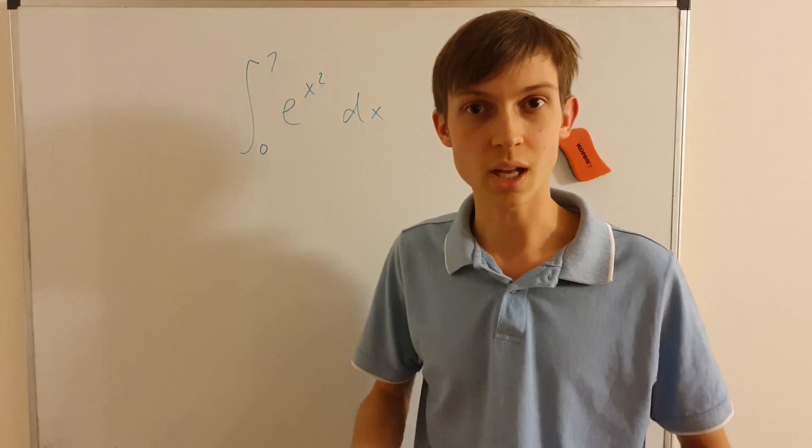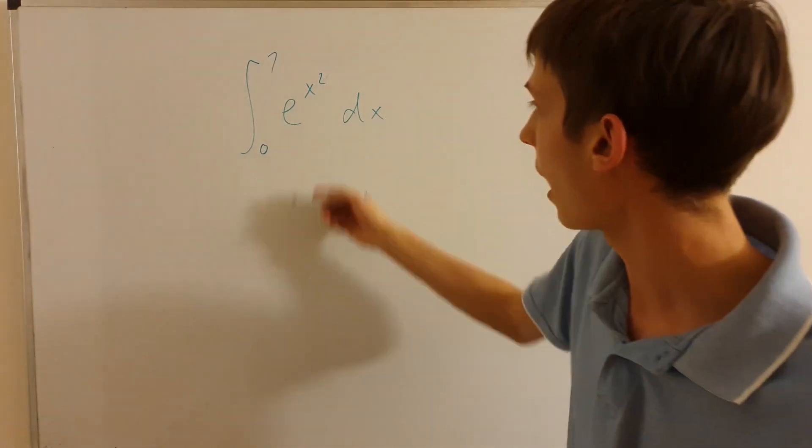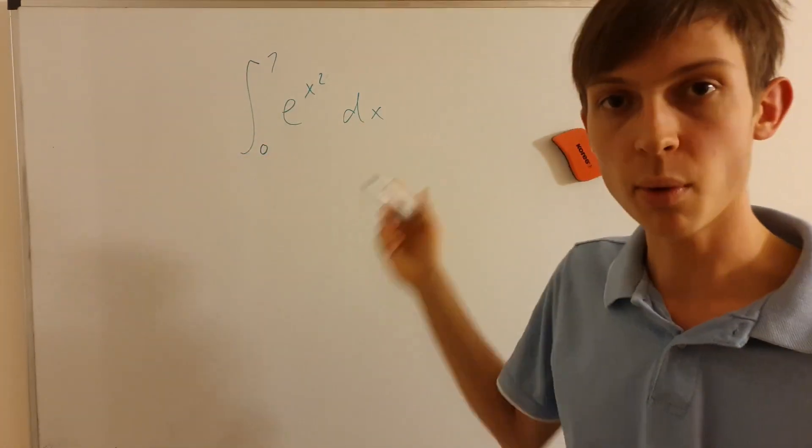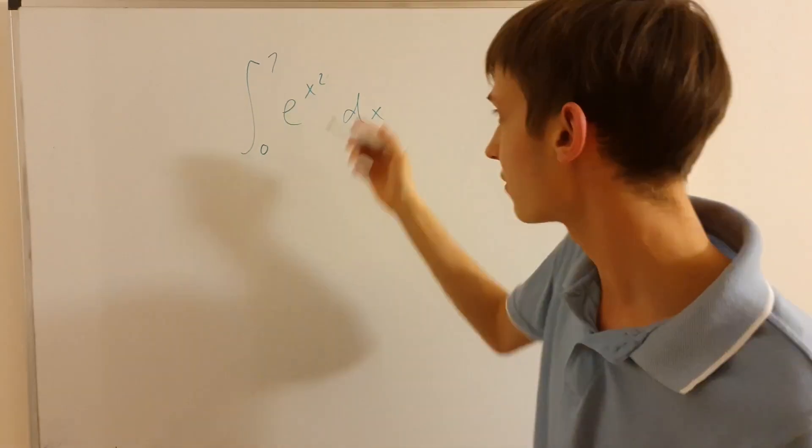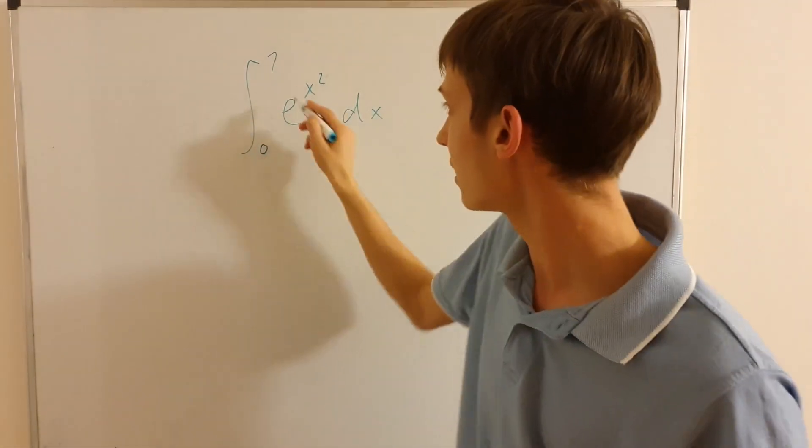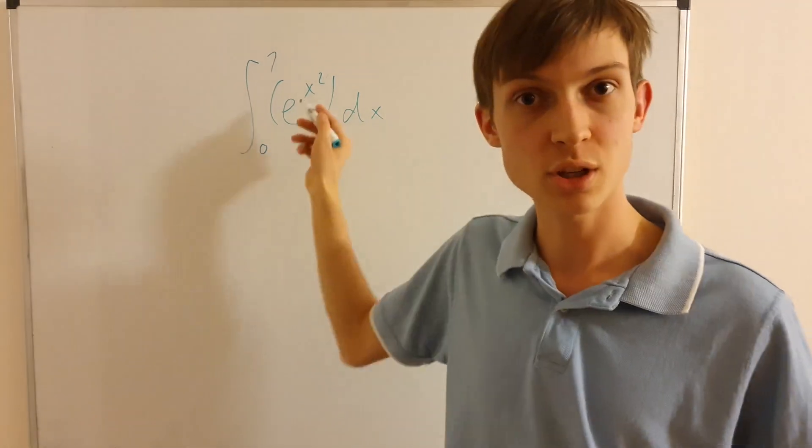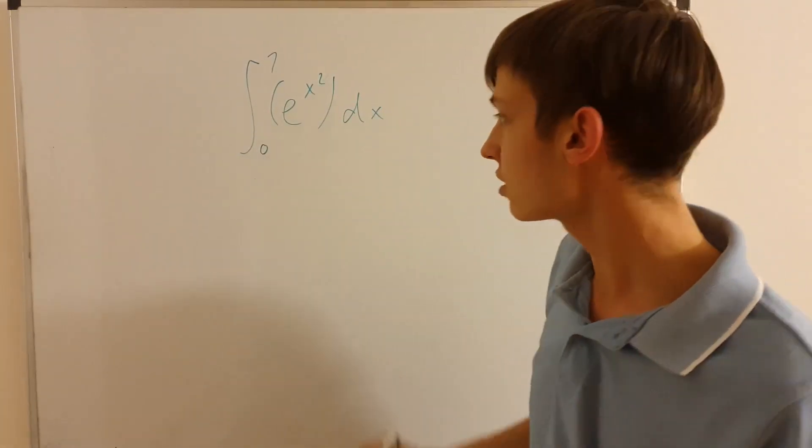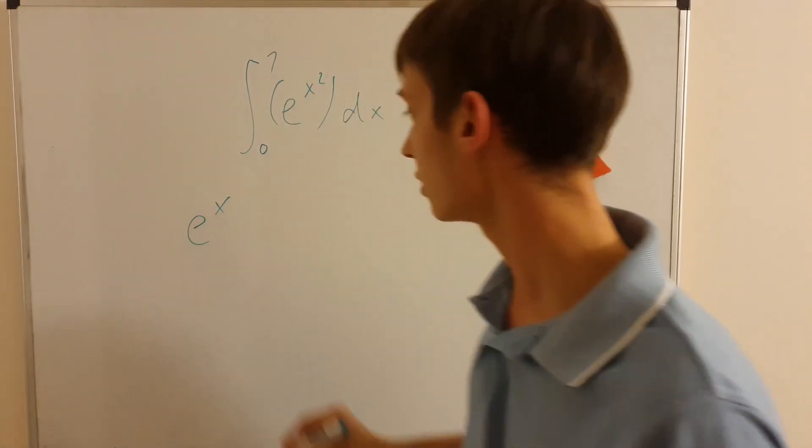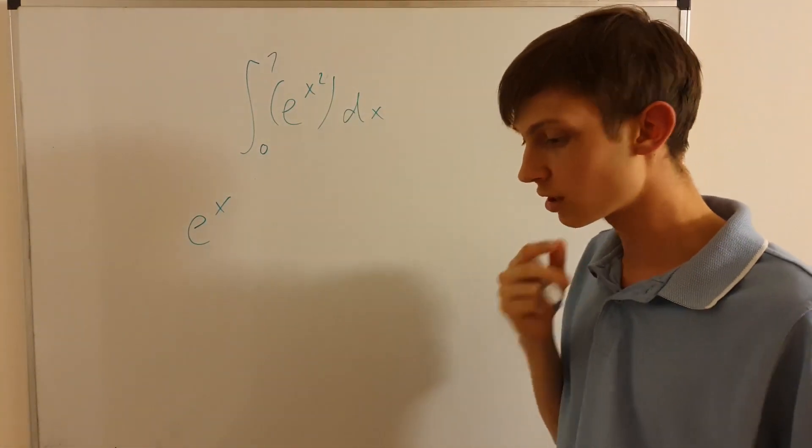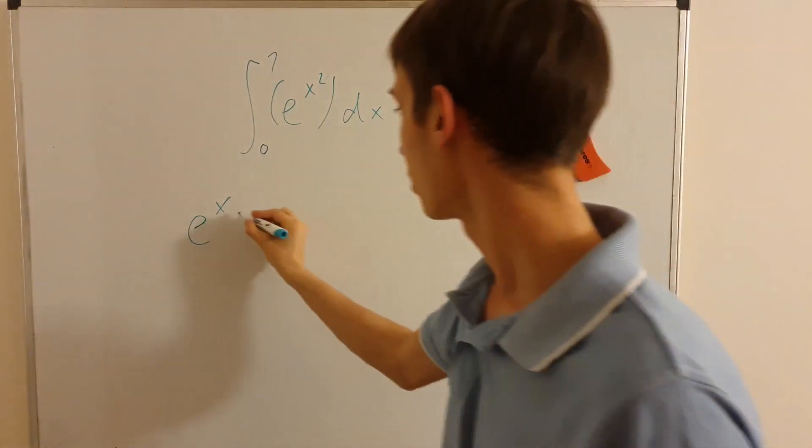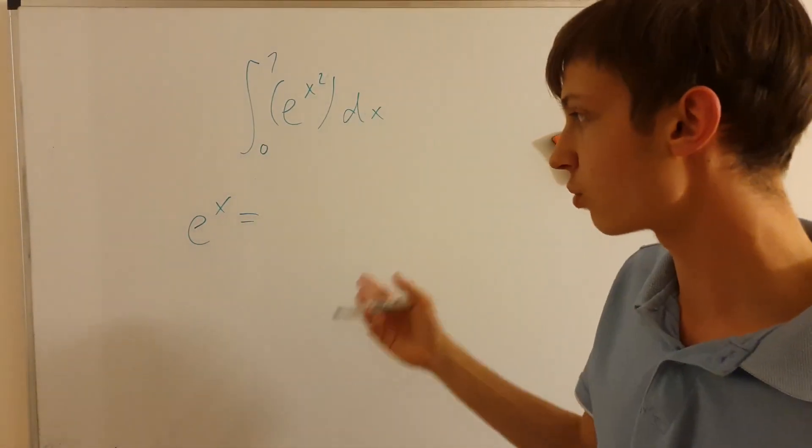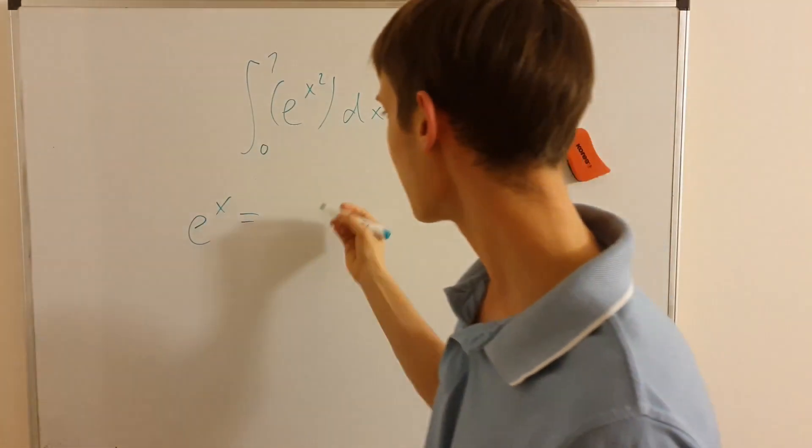So I'm doing interval 0 to 1. And what I will say, instead of integrating this function as it is, I can actually replace this inside, by the re-expression of this e to the x squared, by the Taylor series. And for this, what's really useful to do, is to first figure out, well, what is the Taylor series for e to the x? So it's probably one of the easiest ones to remember. It is namely as follows.